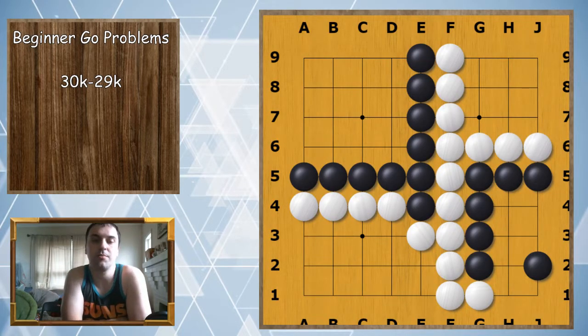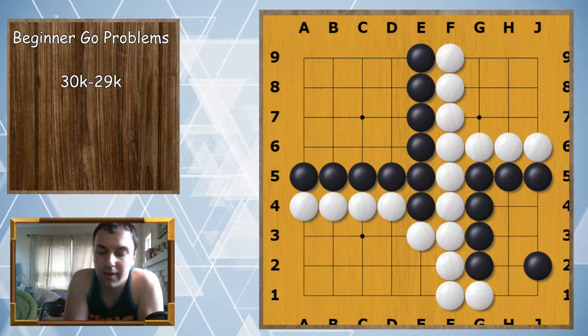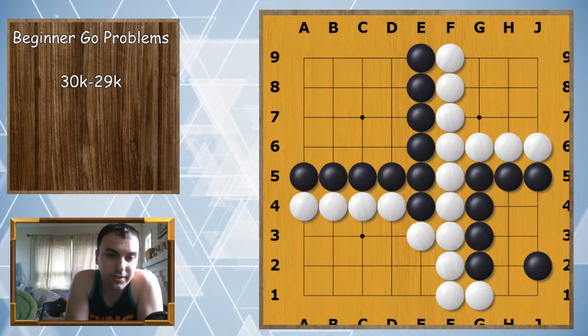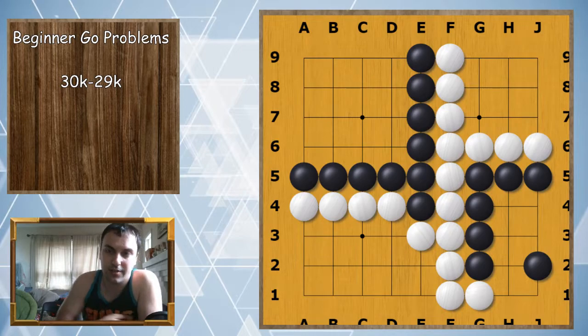Black to finish the territory. Remember at any time you can pause the video and try to solve these on your own. Go ahead and try to find all the territorial areas, see what is unfinished, and see if you can find where Black needs to play to finish the territory.